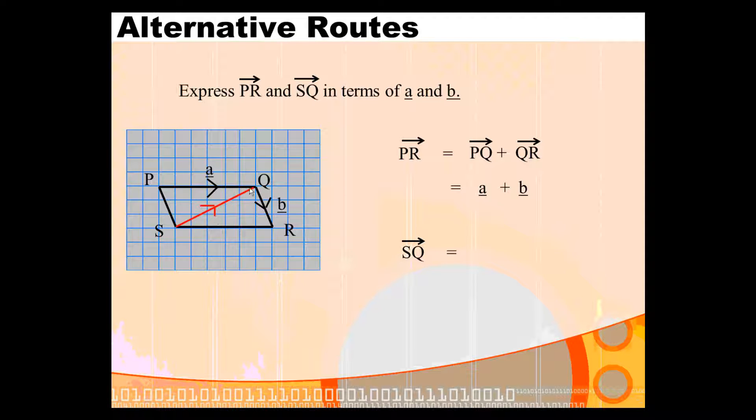SQ takes you directly up, but again we don't have the information we need. So because it's a parallelogram, if we go via R, we can say that the journey from S to R would be the same as the set of instructions that would take you from P to Q.